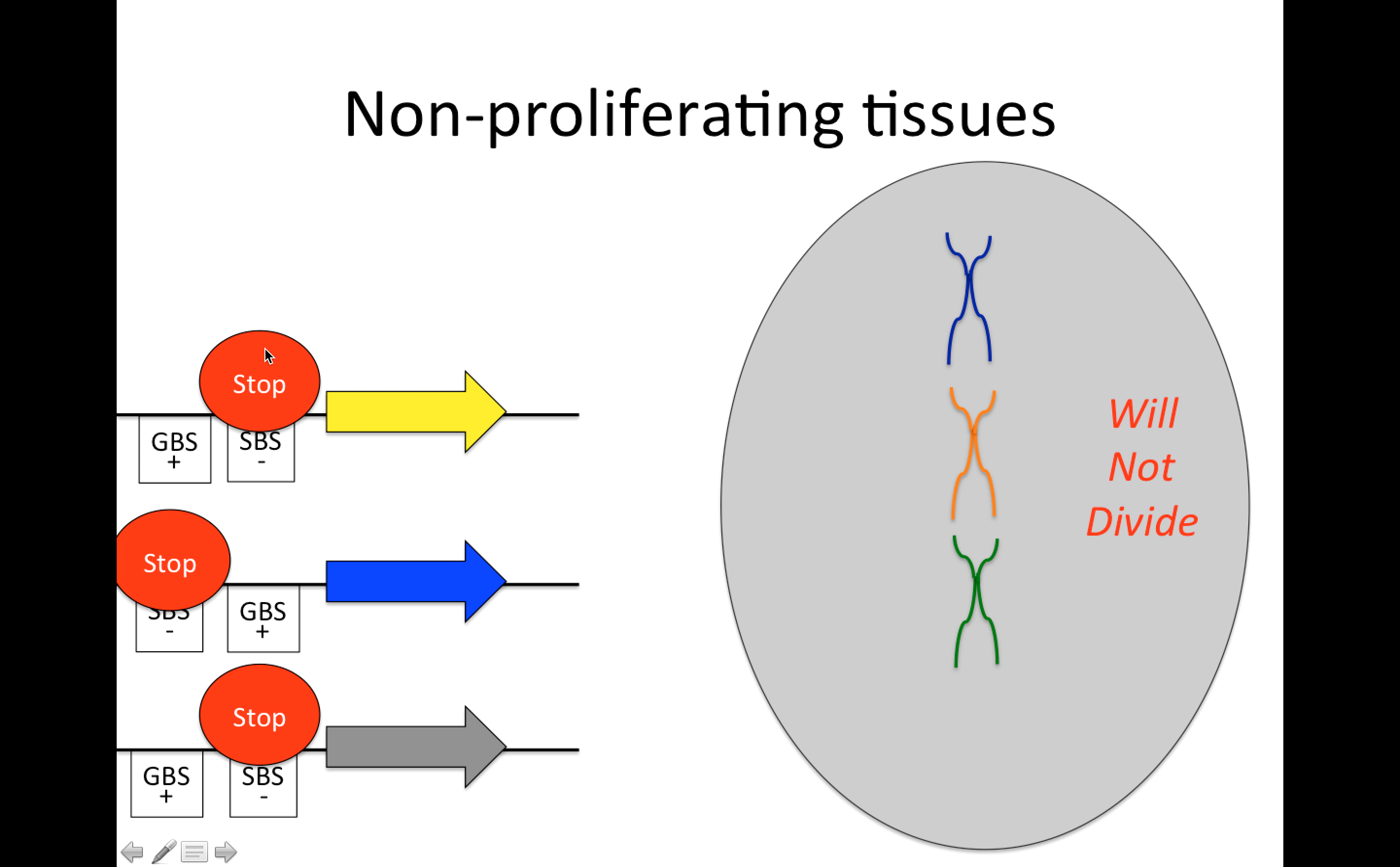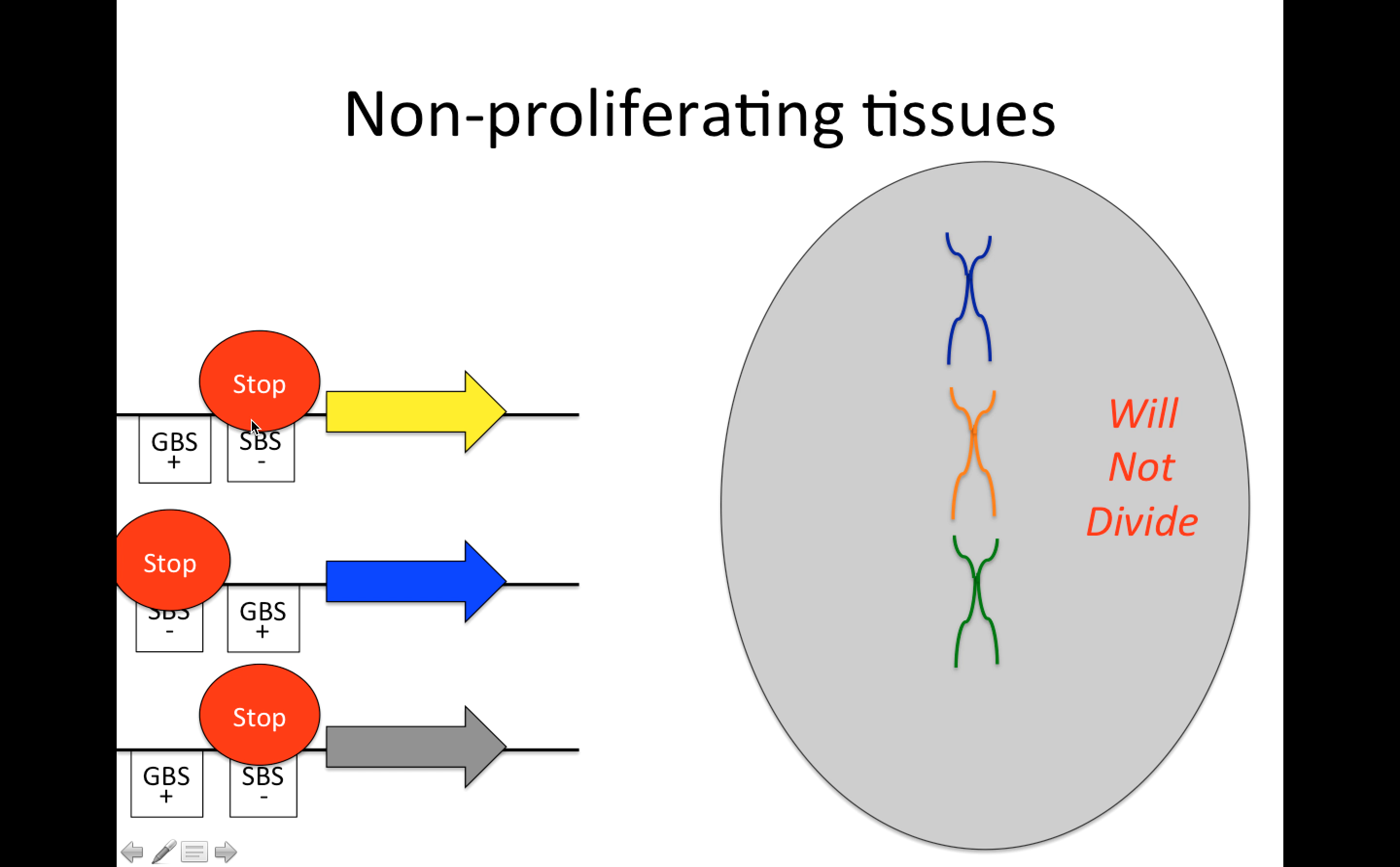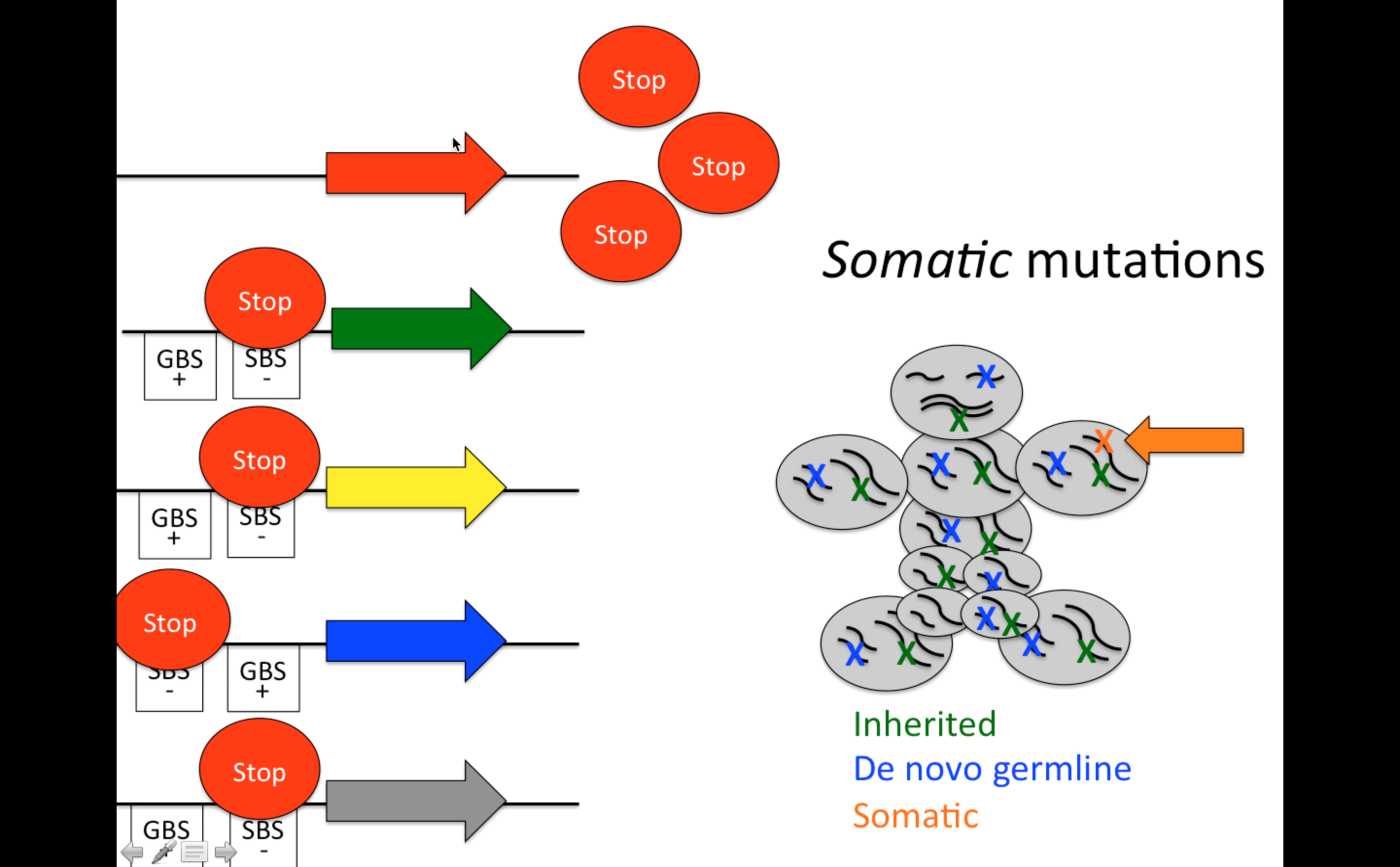So if we start with non-proliferating tissues, how do we get from this healthy state where we have suppression of the cell cycle to here where we have the cell cycle going at the wrong time? Well, let's start by recognizing that this stop protein that we've been using is itself encoded by a gene.